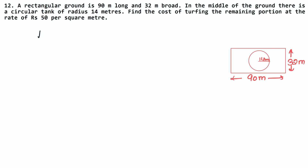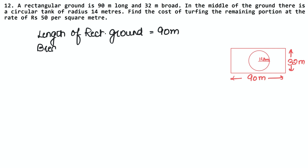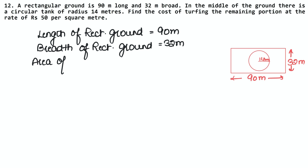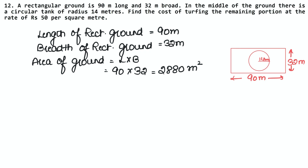So the length of the ground is 90 meters, and the breadth of the rectangular ground is 32 meters. Area of ground equals length into breadth — that is 90 meters into 32 meters. So the area is 2,880 meter square.